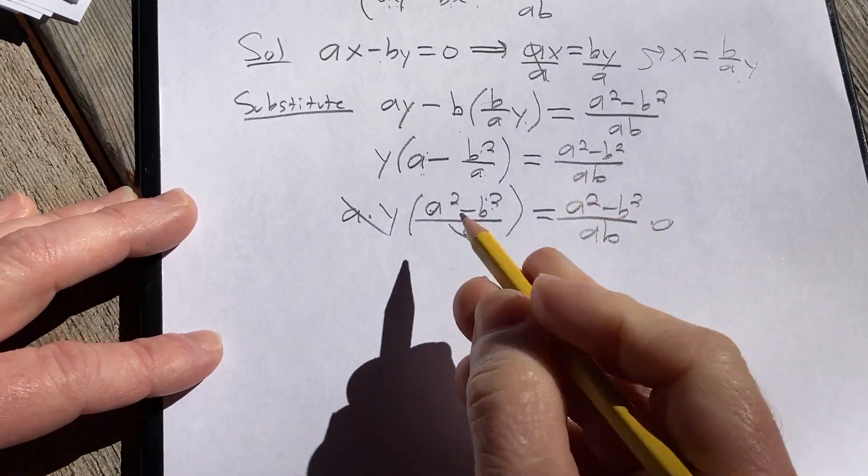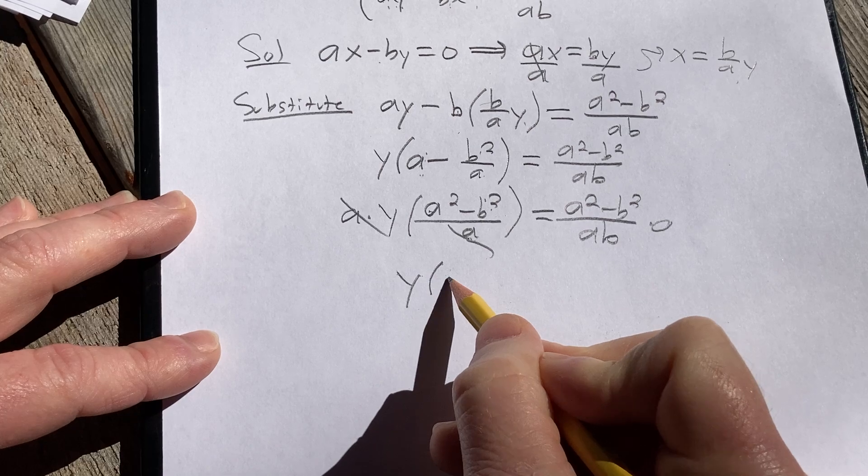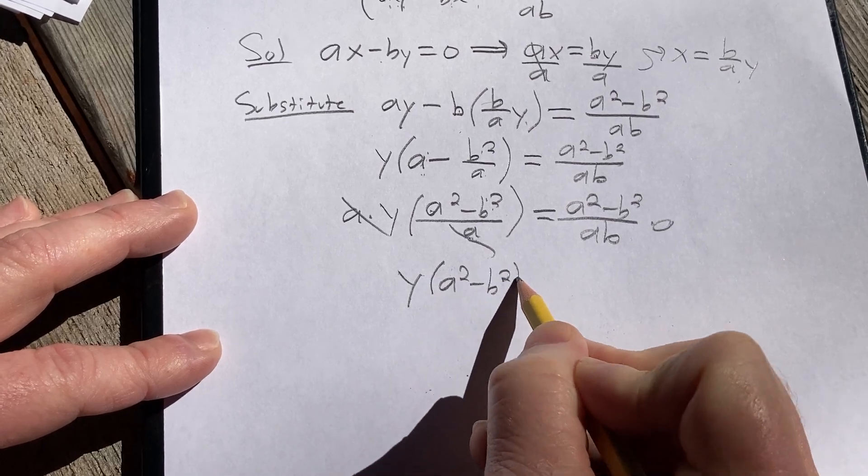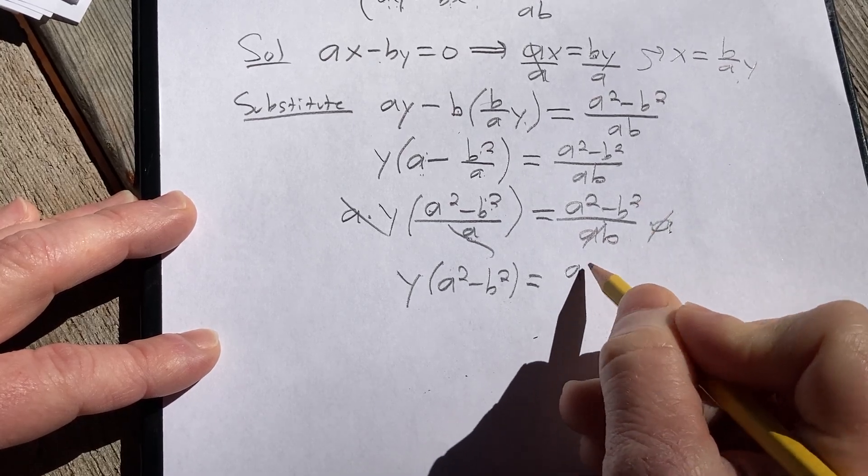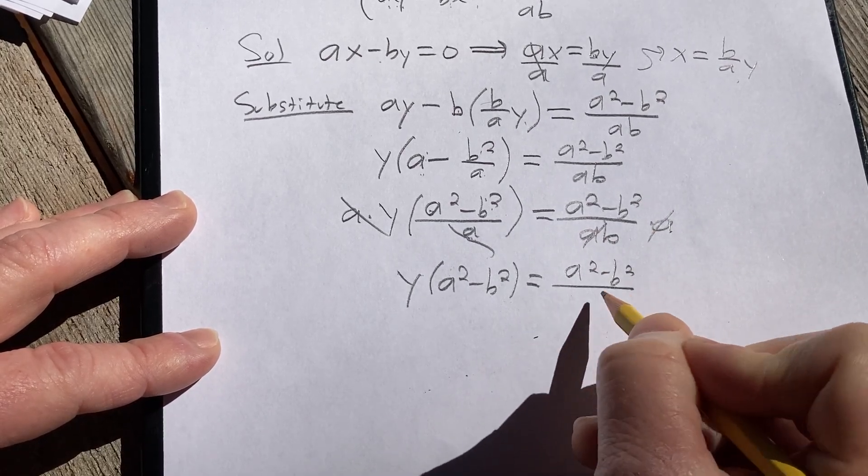Those go away. So we simply have y times parentheses a squared minus b squared equals—these a's cancel—and then here we have a squared minus b squared over b.